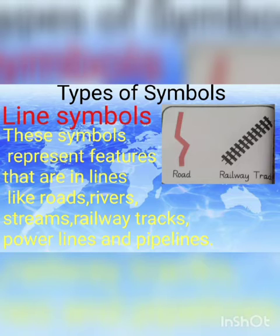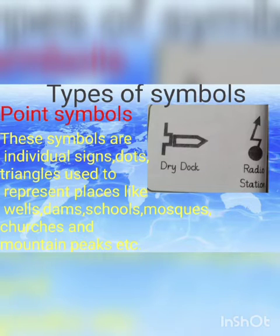With these symbols we can easily find out about roads, rivers, railway tracks, power lines, and pipelines. The third type of symbols are point symbols. These symbols are individual signs — یعنی کہ یہ different signs ہیں۔